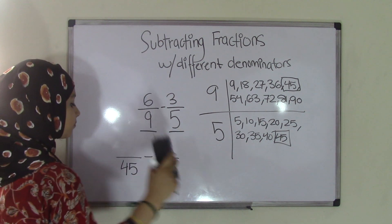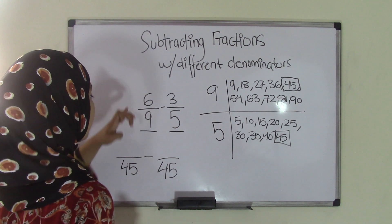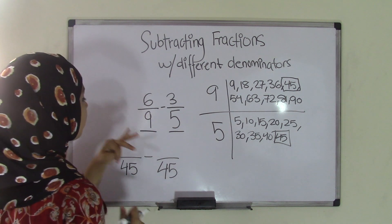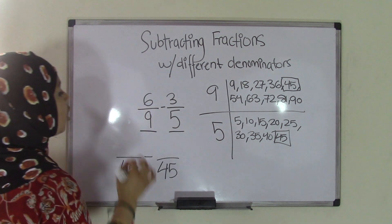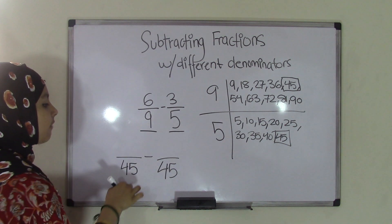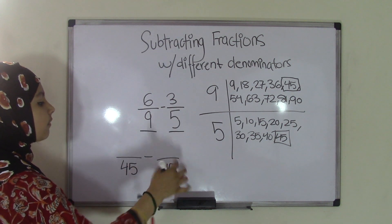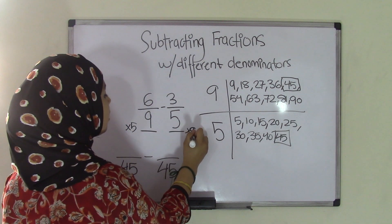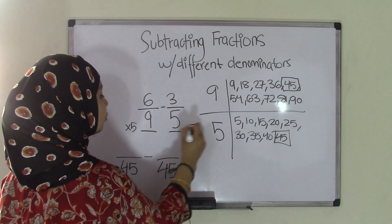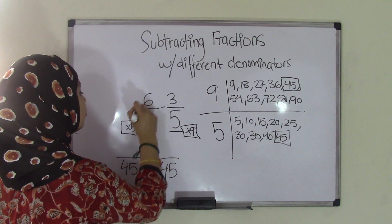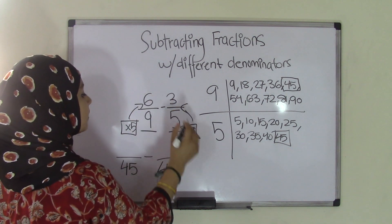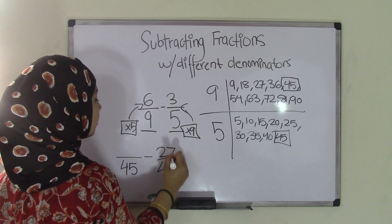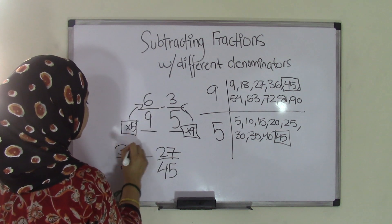So what we're going to do is, we look at our original denominators and see what times 9 gave us 45, and what times 5 gave us 45. We know that 9 times 5 is 45, and 5 times 9 is 45. What you're going to do is apply this rule to the numerator. So that means 9 times 3 is 27, 6 times 5 is 30.